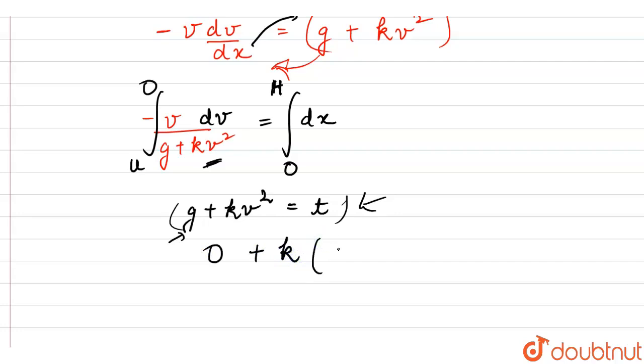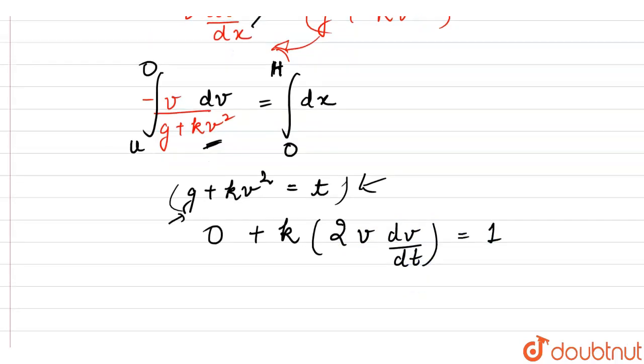For velocity, we have to apply chain rule here v squared. This differentiation would be 2v dv over dt. This equals 1. We get vdv. The value of vdv is dt divided by 2k.